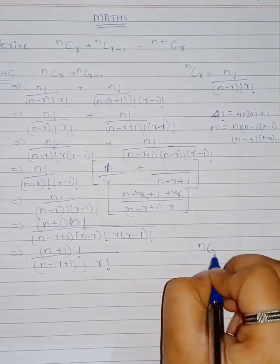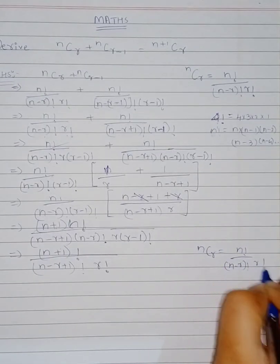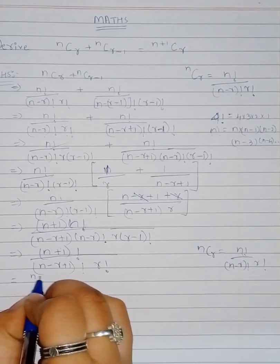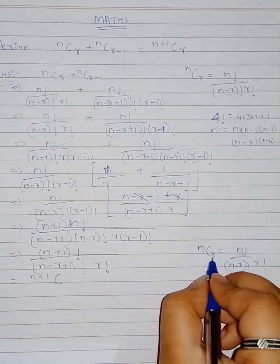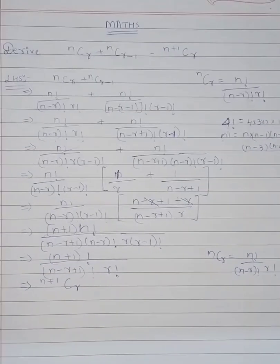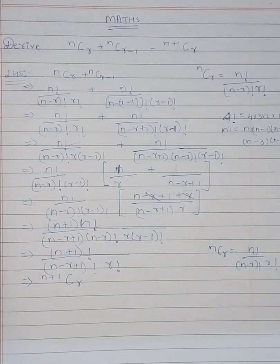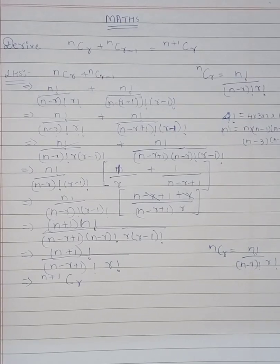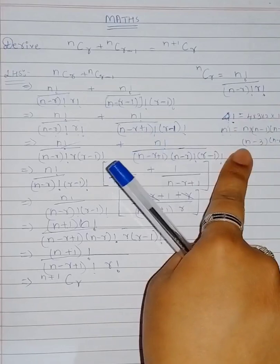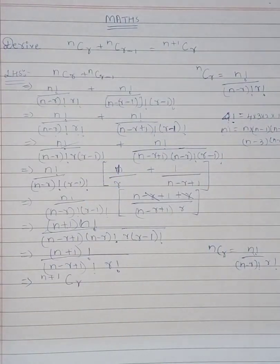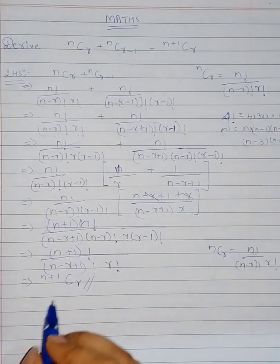Recall that ⁿCᵣ = n! / [(n−r)! · r!]. Here, n is replaced by n+1, C remains, and r stays as r. So the expression equals ⁿ⁺¹Cᵣ, which is the RHS. We started with LHS, identified common terms, took LCM, arranged the factorial form, and arrived at ⁿ⁺¹Cᵣ.